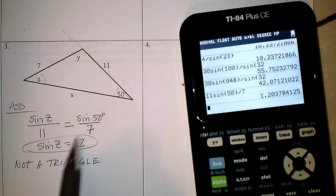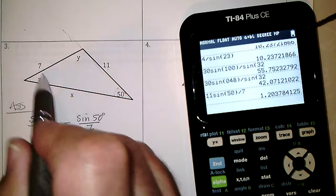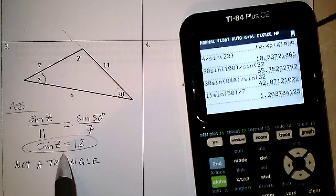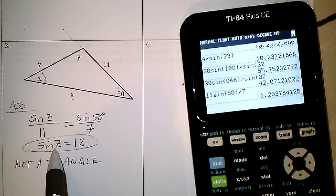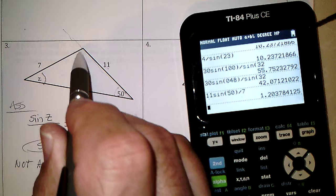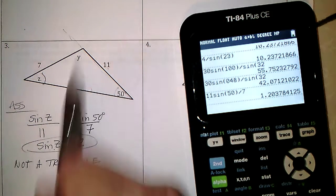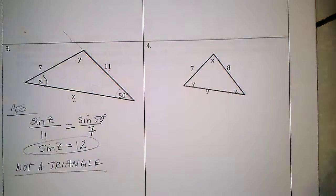Now, if the sine value had been less than 1, I would have to use that angle to figure out y and z from it, and then do 180 minus that angle, since z could have been obtuse, and solve the triangle again. But this time it turned out to not even be possible.